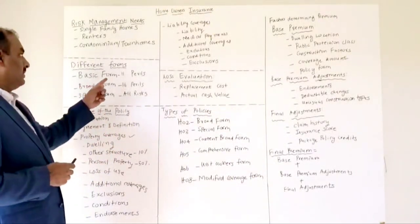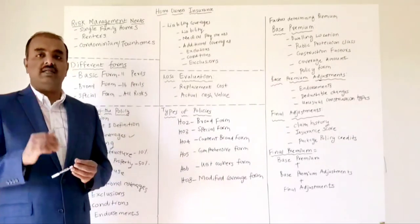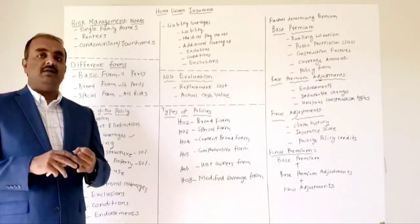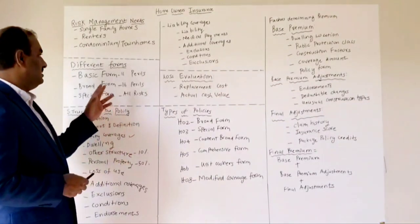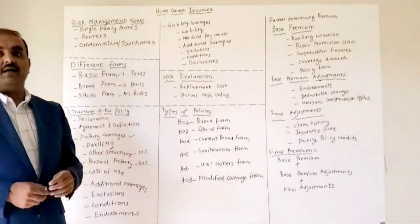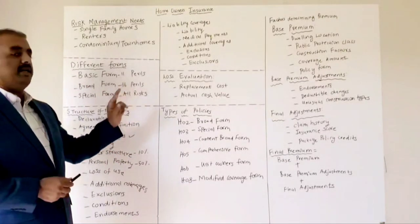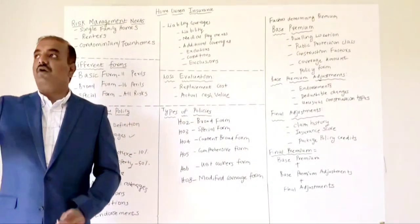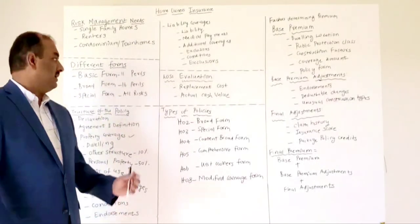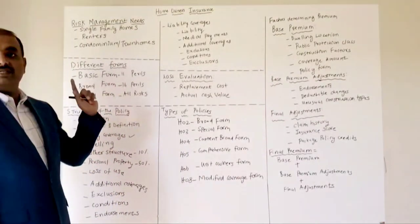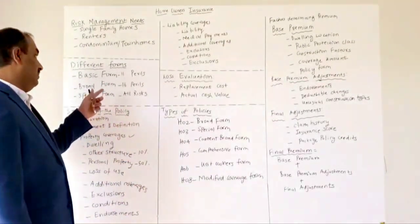The basic form covers 11 perils — perils are causes of loss like fire, water leakage, vandalism, or theft. The broad form covers 16 perils, adding things like falling objects that damage your home. If there is water leakage in the basement, that would come under the basic form. The special form is a very good form with a higher premium — it's all-risk coverage, meaning anything that happens to your home is covered unless it is specifically excluded.